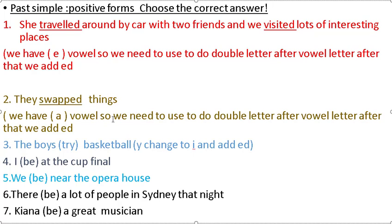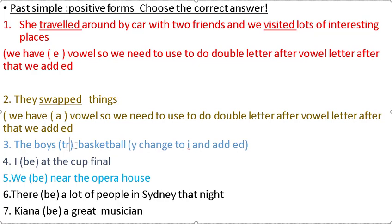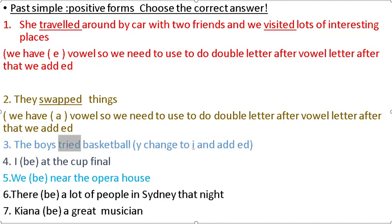For 'try': change Y to I and then add -ED — 'tried.' The boys tried basketball. For 'I be at the cup final': we have subject I and verb 'be.'